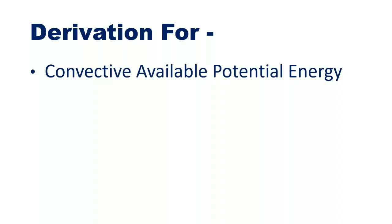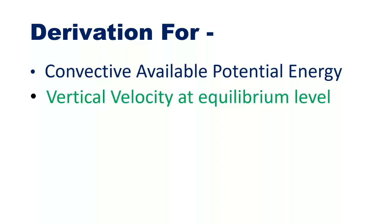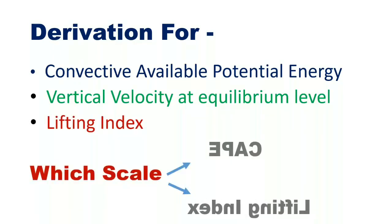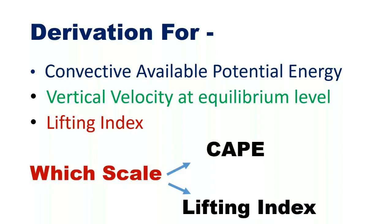In the next video, we will see the mathematical representation for convective available potential energy, vertical velocity at the equilibrium level, and the lifting index. The main point will be which scale is preferred for weather prediction between CAPE and the lifting index.